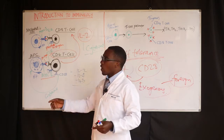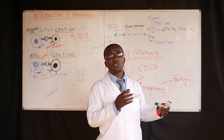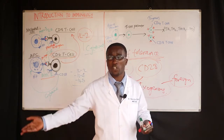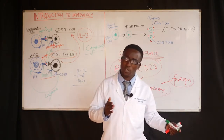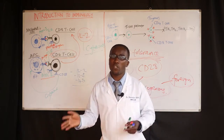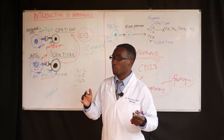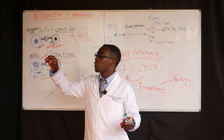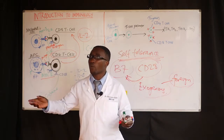The B-cells will also differentiate — some groups will differentiate into plasma cells. The plasma cells are the ones which produce antibodies, and those antibodies are usually specific for the antigen that induced their production.